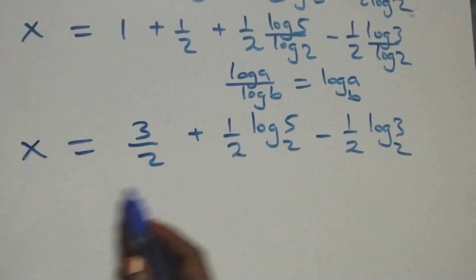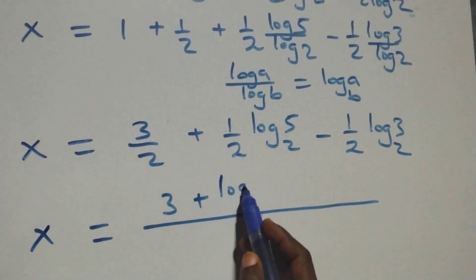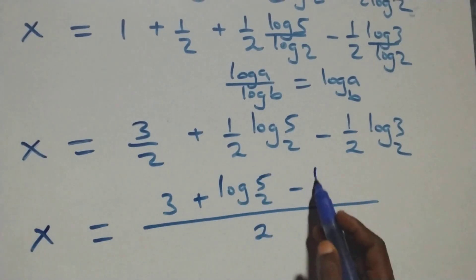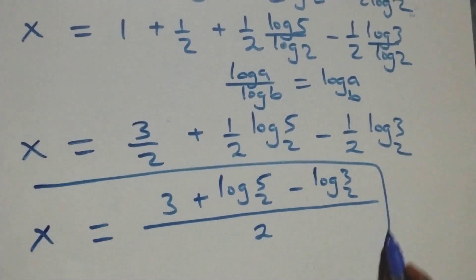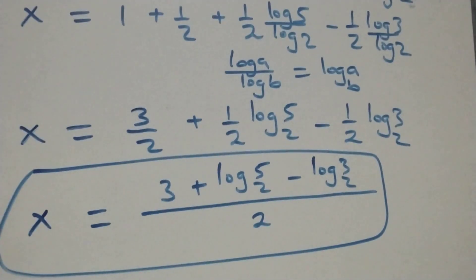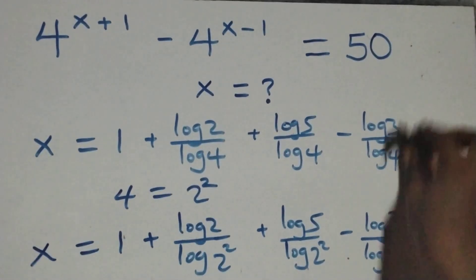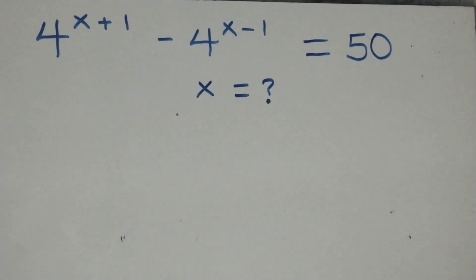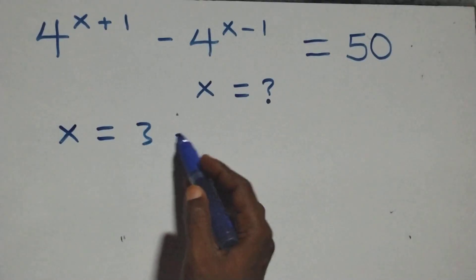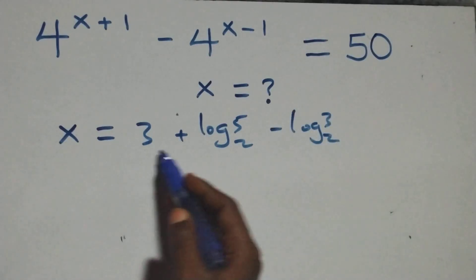Then here, we bring this together as one fraction. We have x equals — the denominator is 2 — and we have 3 plus log 5 base 2 minus log 3 base 2. That is the value of x here. We have x equals to 3 plus log 5 base 2 minus log 3 base 2, all over 2. Now let's check here. If this satisfies this problem, we substitute the value of x, which is x equals 3 plus log 5 base 2 minus log 3 base 2, all over 2.